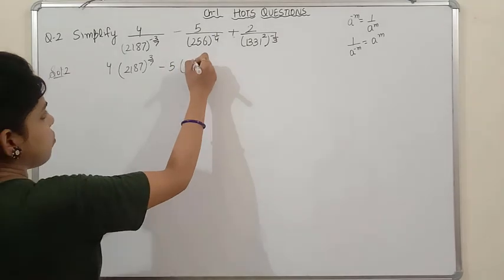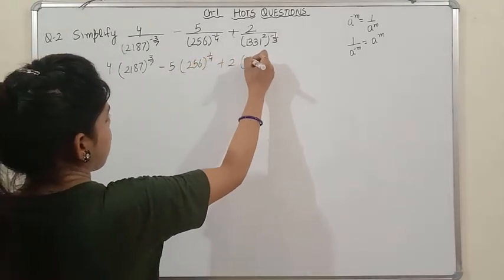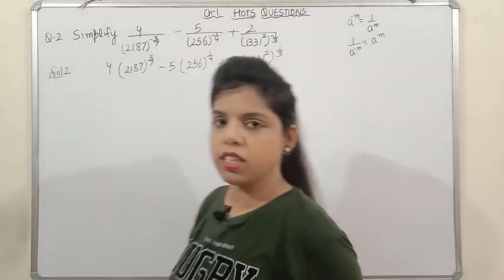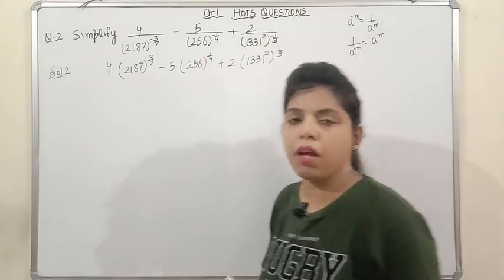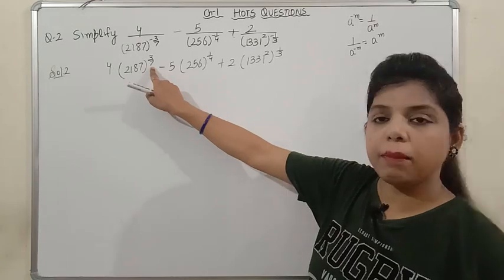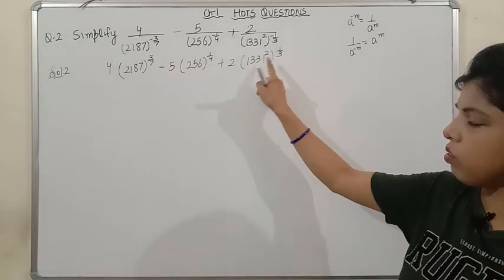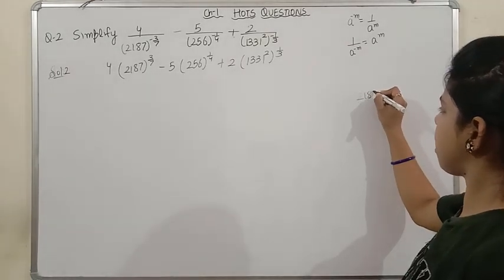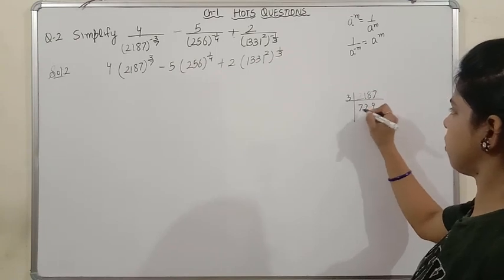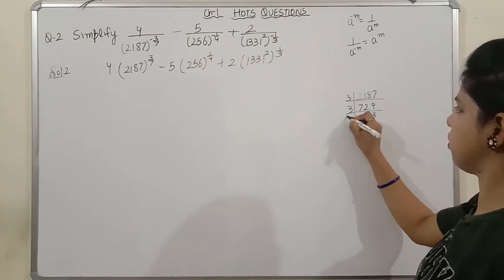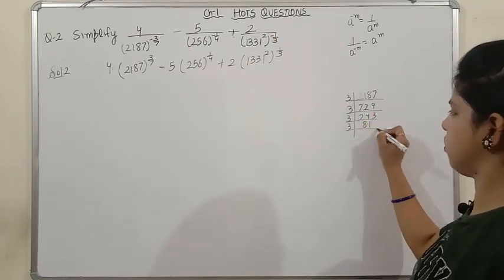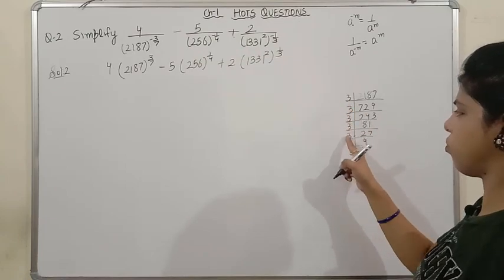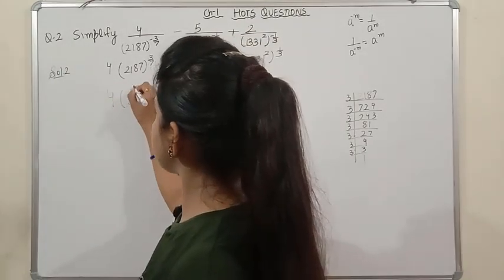So the first step is to make all exponents positive: 4 × (2187)^(3/7) − 5 × (256)^(1/4) + 2 × (1331)^(1/3). Your main focus should be on expressing these numbers as perfect powers. For 2187, find its factors — dividing repeatedly by 3, you get 3^7. So 2187 = 3^7.